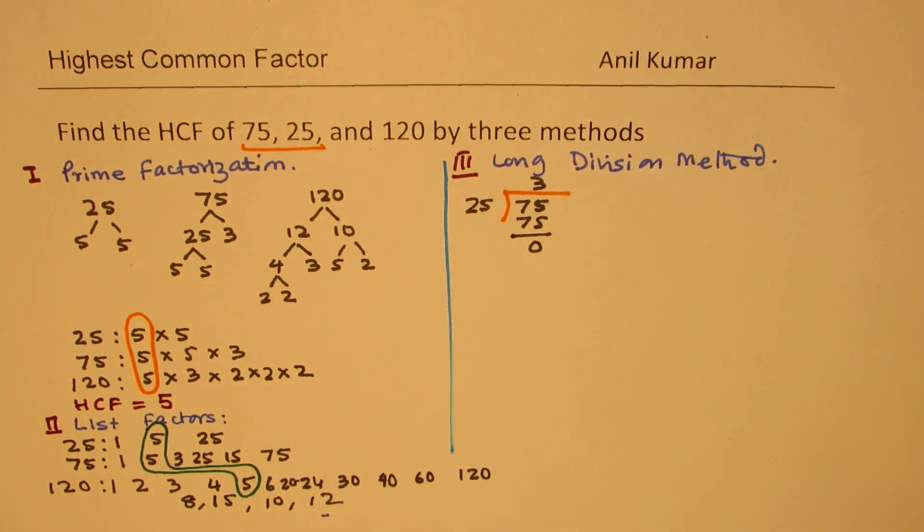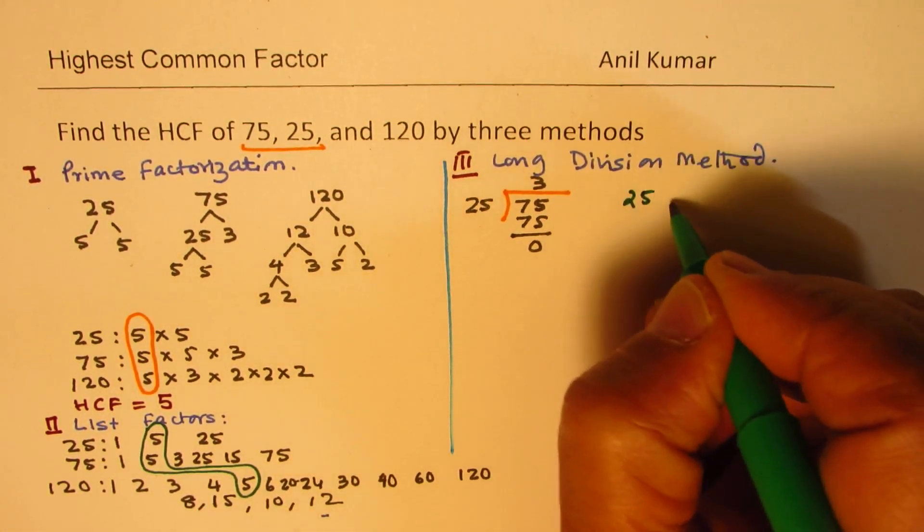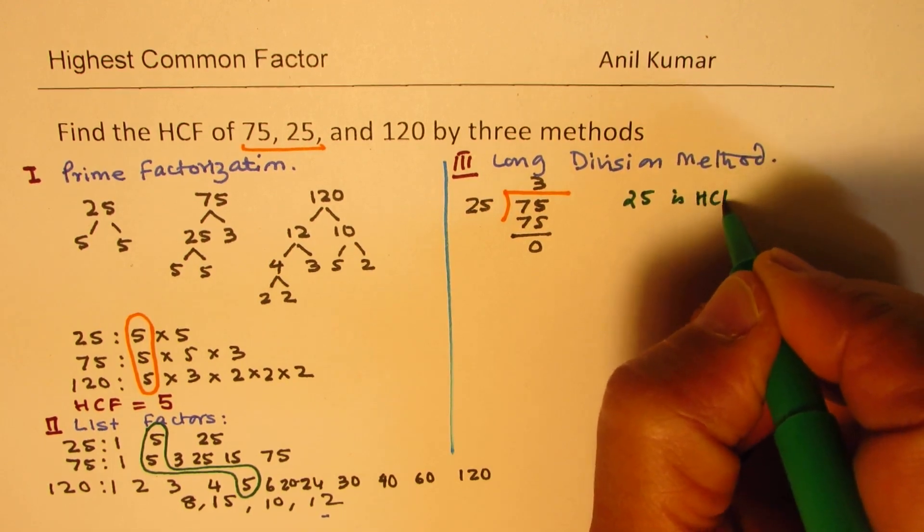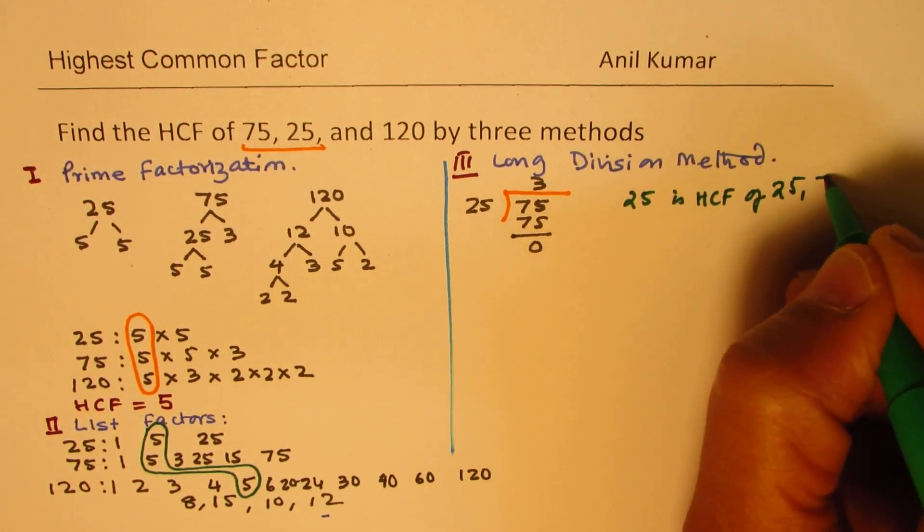So, now, since we have 25 as our HCF, 25 is HCF of 25 and 75.